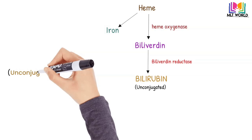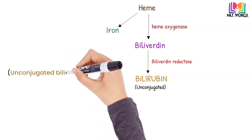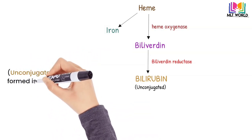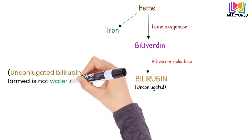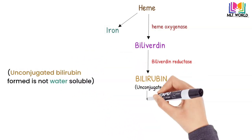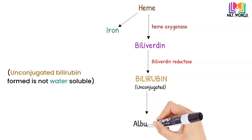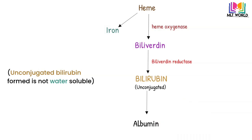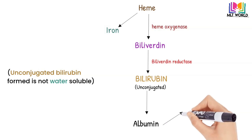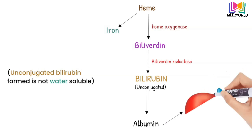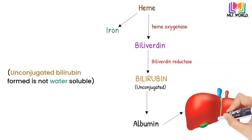An important point here: this bilirubin is unconjugated bilirubin. Unconjugated bilirubin is not water soluble, so it needs something to enter into the liver. With the help of albumin, it will enter into the liver. This unconjugated bilirubin combines with albumin and then enters into the liver.